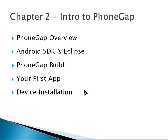With PhoneGap Build, you basically just upload your HTML, CSS, and JavaScript, and it'll spit out a native app file — for instance, an APK for Android — and you can just install that right on your device. PhoneGap Build is really the method we'll be using. We'll also build our first app, which will be very simple, and we'll look at how to install that app onto the actual device.